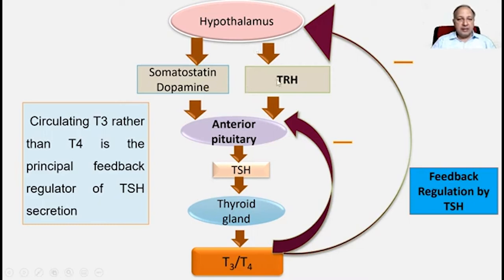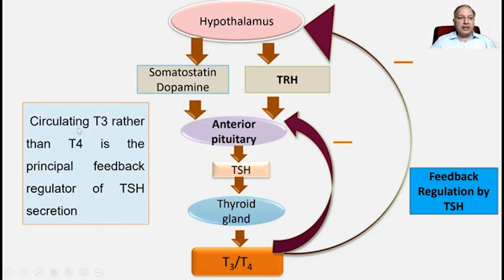Whenever TRH is released, TSH is released and acts on the thyroid gland, causing the release of T3 and T4 hormones. When T3 and T4 enter the blood, they cause inhibition both at the level of the anterior pituitary and the hypothalamus, leading to inhibition of further synthesis. This negative feedback inhibition plays an important role in regulating thyroid hormones T3 and T4 via TSH. Importantly, it is circulating T3 rather than T4 which is the principal feedback regulator of TSH secretion.